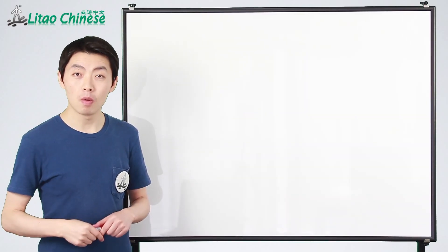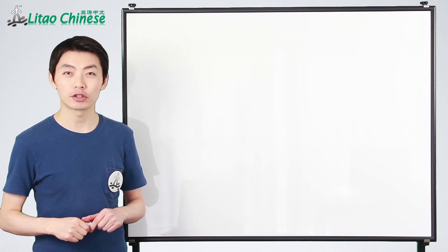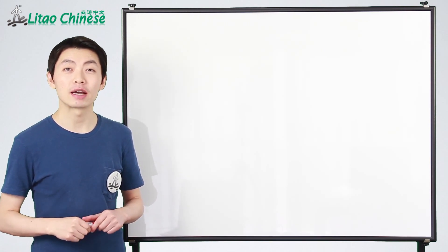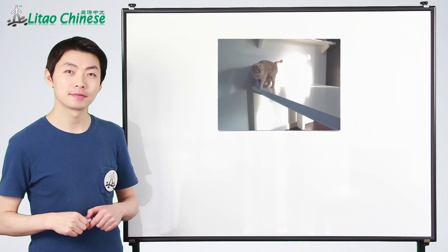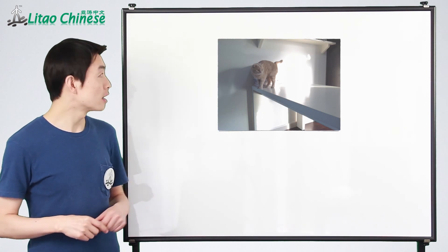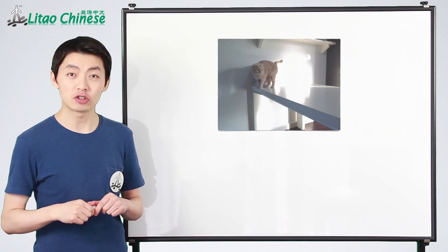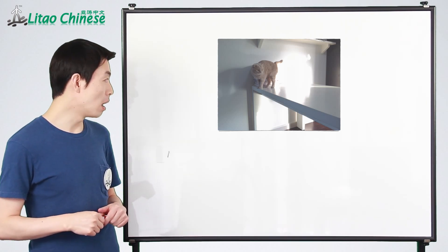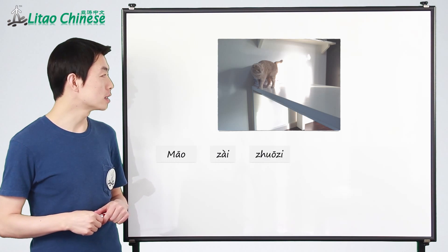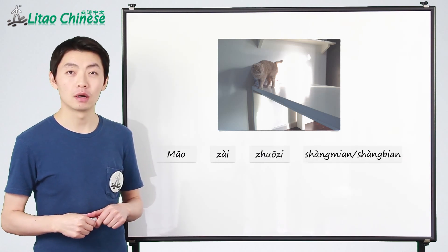Today, we'll learn more about similar structures. Let's have a look at the first picture. In this picture, you can see the cat is on the table. In Chinese, we say 猫在桌子上面 or 上边.